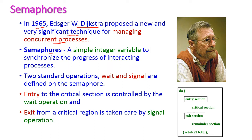Now, let us see what a semaphore is. A semaphore is nothing but a simple integer variable. This integer variable is used to manage concurrent processes by using two operations called wait and signal.